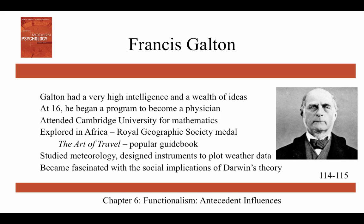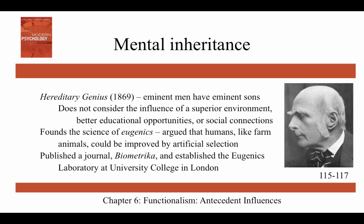Because his cousin Charles Darwin published On the Origin of Species, Galton became fascinated with the social implications of Darwin's theory, including the idea of mental inheritance. In 1869, Galton wrote Hereditary Genius, arguing that eminent men have eminent sons — great scientists were likely born into families of other great scientists. He did not consider the influence of a superior environment, better educational opportunities, or social connections. Galton also founded the science of eugenics, arguing that humans, like farm animals, could be improved by artificial selection. He established a journal, Biometrica, and a eugenics laboratory at University College in London.